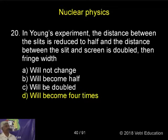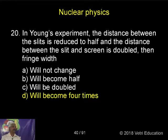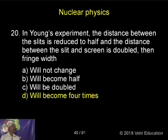In Young's experiment, the distance between the slits is reduced to half — the slit separation, small d, is reduced to d/2. And the distance between the slit and the screen is doubled to 2D.